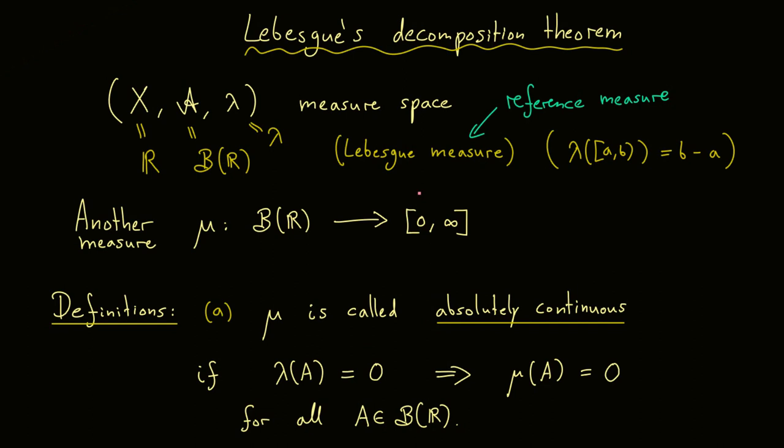However as I said in the beginning you can generalize everything here if you choose another measure instead of the Lebesgue measure as a reference measure. So the term absolutely continuous is always to be understood with respect to a given reference measure. Only in this case when we have the Lebesgue measure as a reference measure we can omit this. Please remember now a new measure mu is called absolutely continuous when all the sets that the reference measure sends to zero are also sent to zero by our new measure mu.